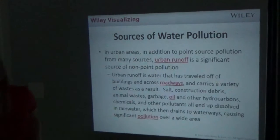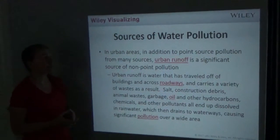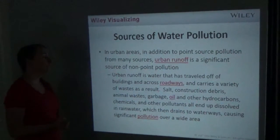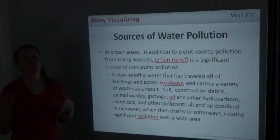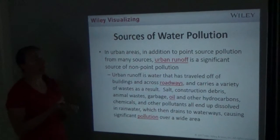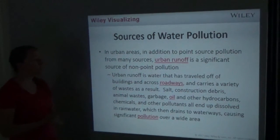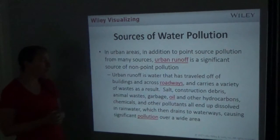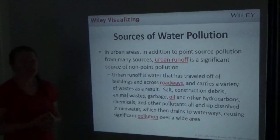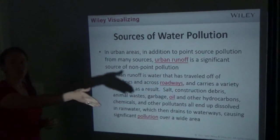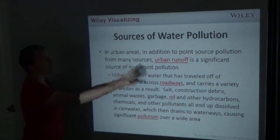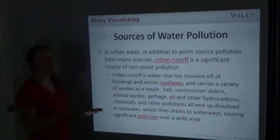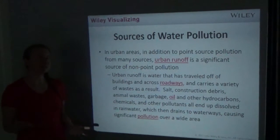In urban areas, in addition to point source pollution, urban runoff is a significant source of non-point pollution. Urban runoff is water that has traveled off buildings and across roadways, carrying a variety of waste — salt, construction debris, animal waste, garbage, oil, hydrocarbon chemicals, and other pollutants — all dissolved in rainwater that drains into waterways over a wide area. That's why point source pollution is often easier to control.